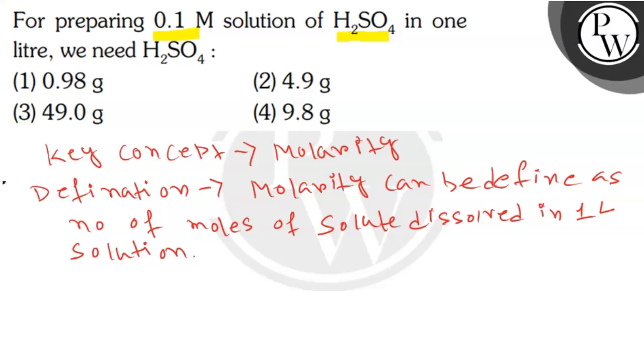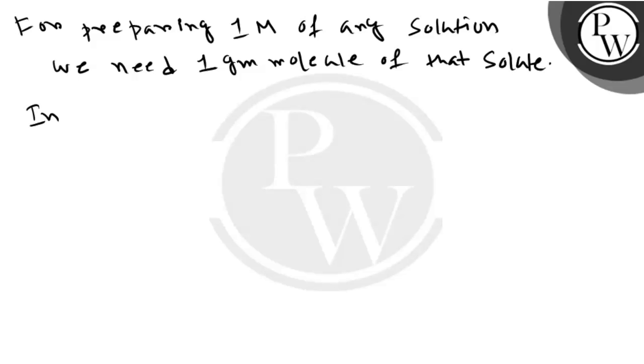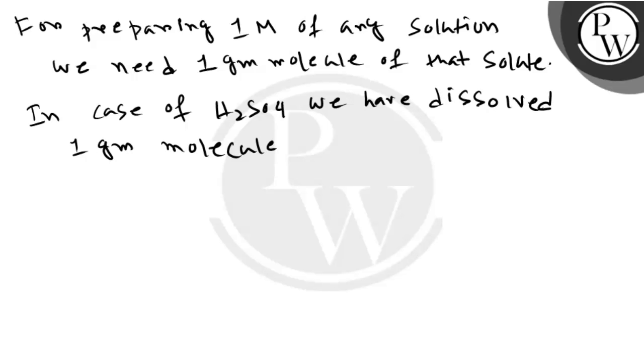Now, coming back to the question, we have to prepare 0.1 molar H2SO4 solution. For preparing 1 molar of any solution, we need 1 gram molecule of that solute. In case of H2SO4, we have to dissolve 1 gram molecule of H2SO4 in 1 liter solution.